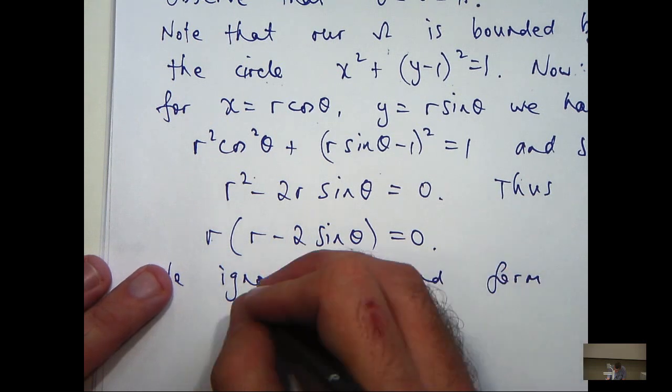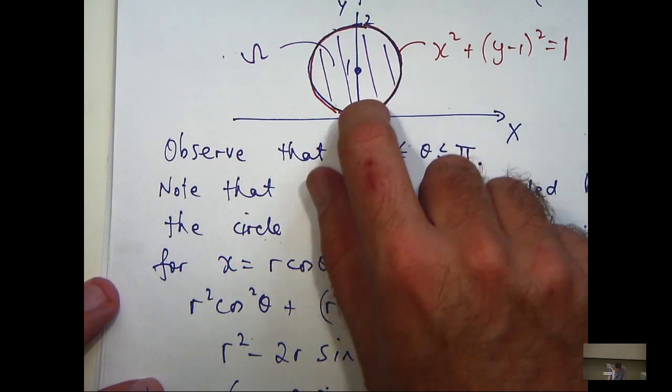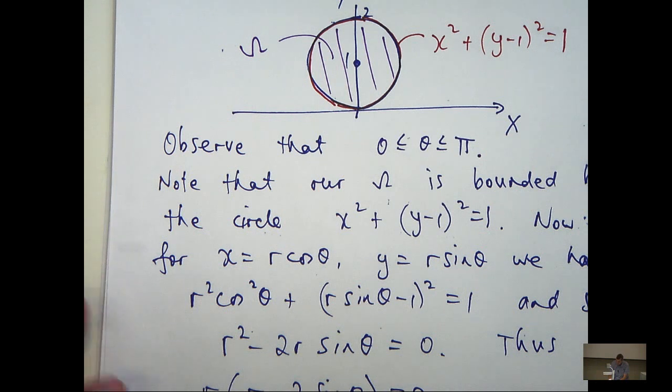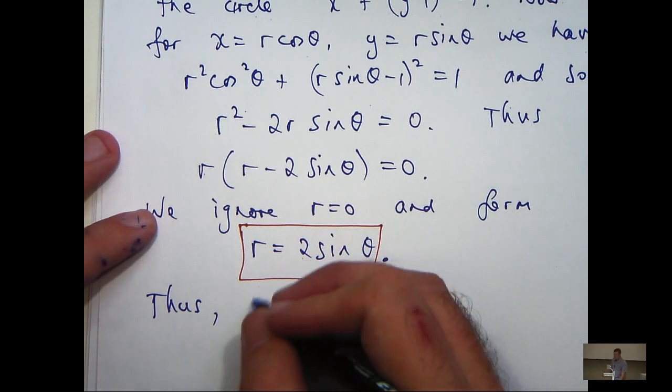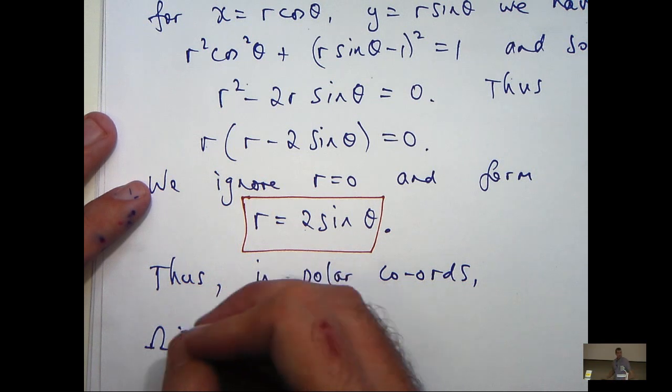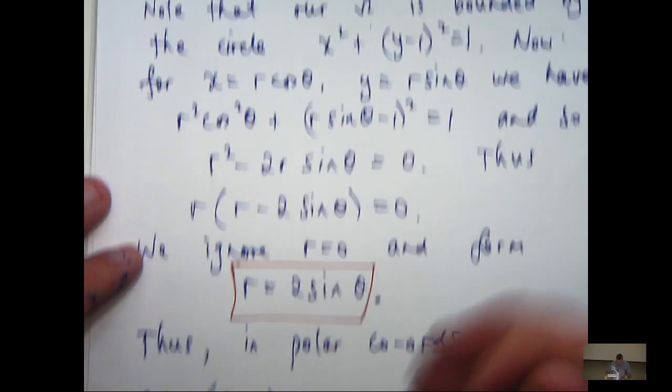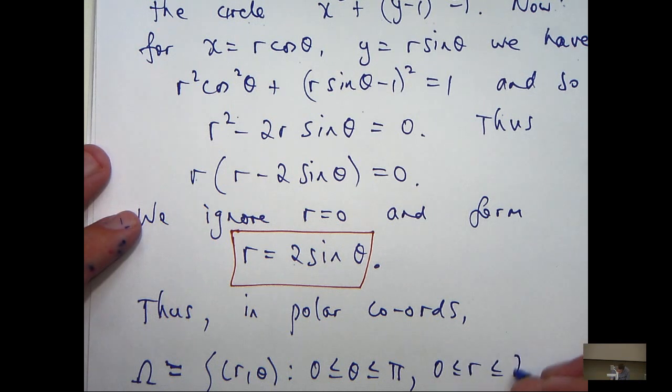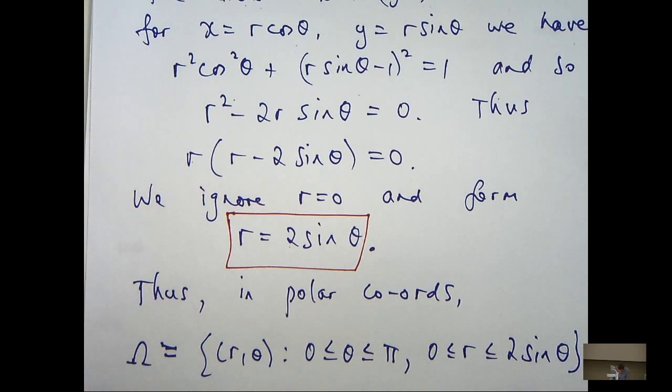So this is the polar description of this circle here. Now you can see that r cannot be bigger than, well, it can't cross this circle. So r has to be less than or equal to 2 sin theta. So let's put everything together. So in polar coordinates, omega is just, so I can take my bounds here for theta. And r is between 0 and 2 sin theta. So we spent a lot of time doing that, but we can now set our integral up.